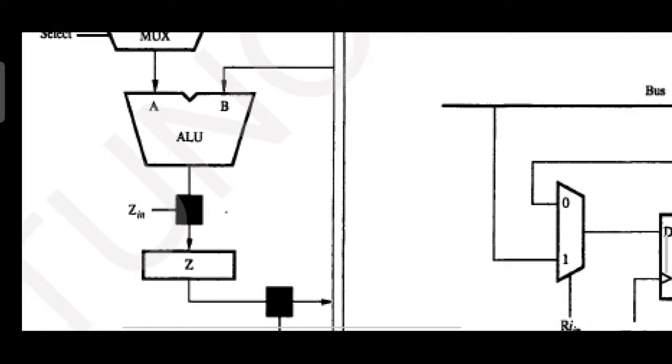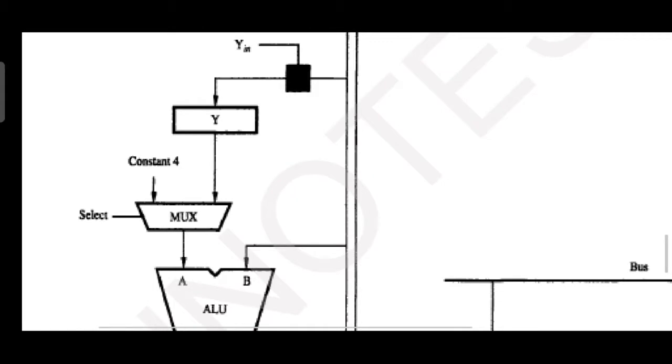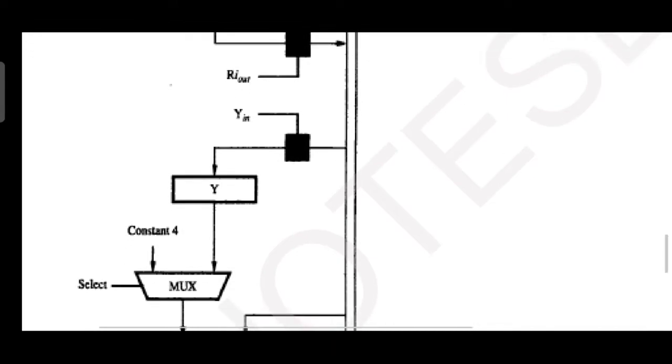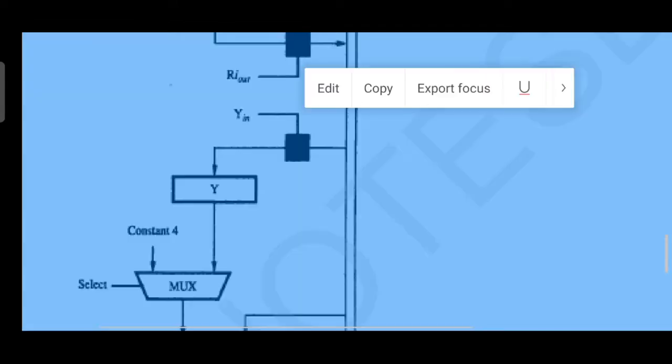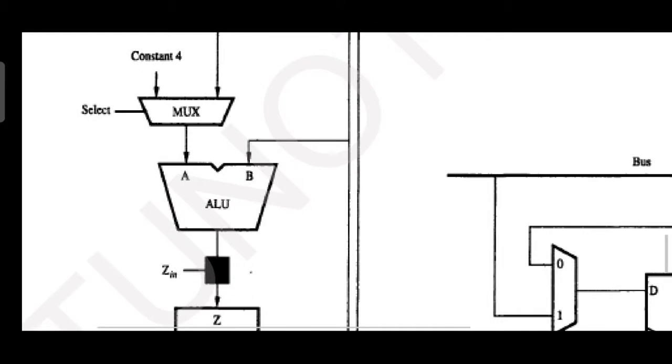The same is applicable for register Z as well. Y is not having another switch say Y out, because by default the content from Y is transferred onto the multiplexer. If RI in is activated, then data from internal processor bus will be copied onto register Y. The same is applicable for register Z as well.